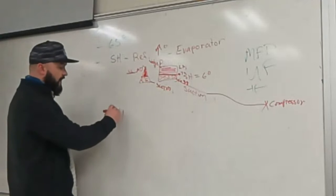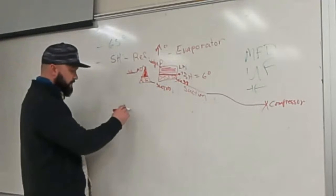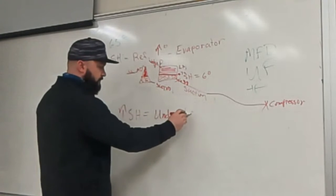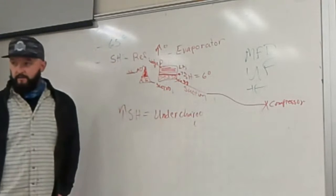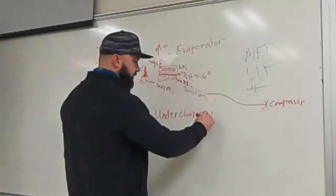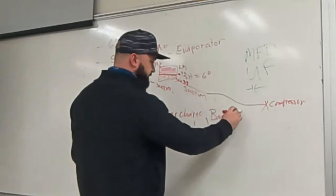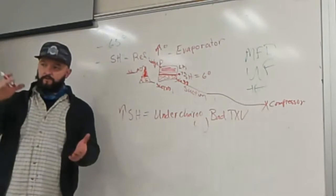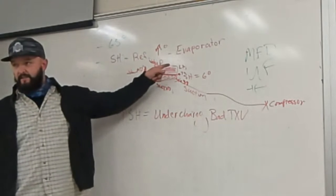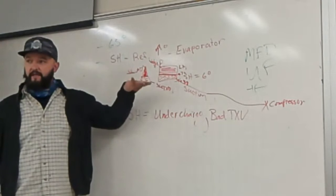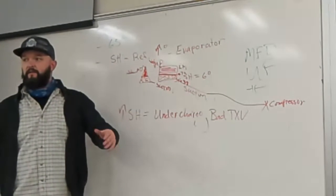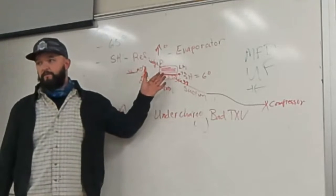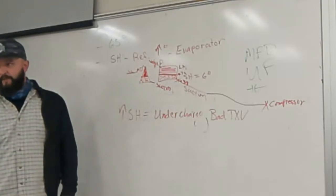For most purposes, reading at the compressor is close enough. Here's what superheat tells you: high superheat equals undercharged, or a bad TXV. The TXV is supposed to open and close to control what it feeds into the coil. If it floods the coil, the refrigerant can't fully change from liquid to gas, and if it starves the coil, you won't have accurate superheat.